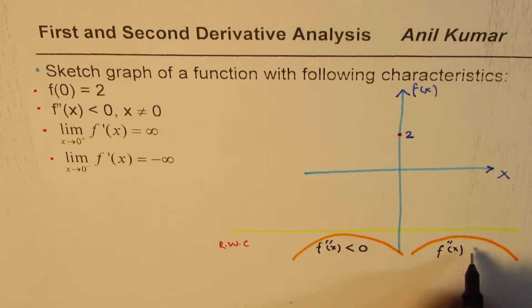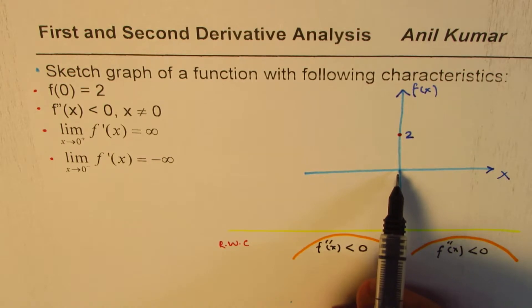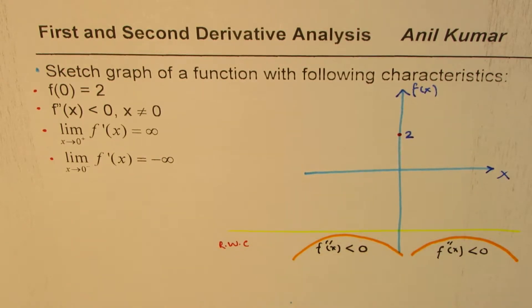The graph of the function is concave down everywhere except this point. Now, that gives you a good idea about how the function may look like.